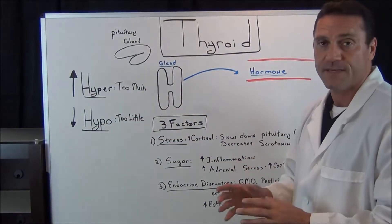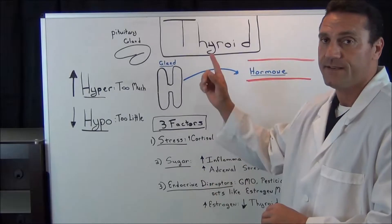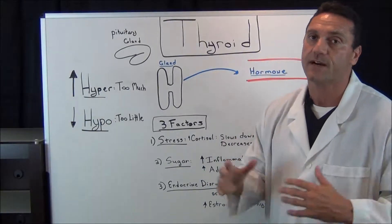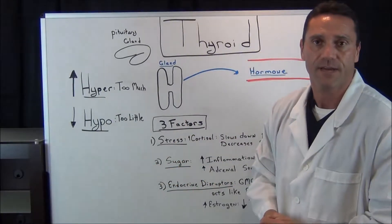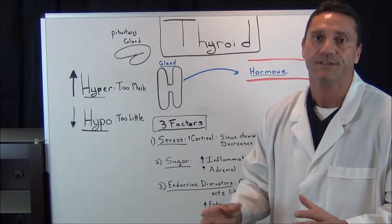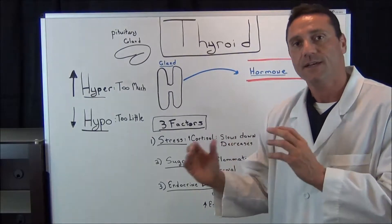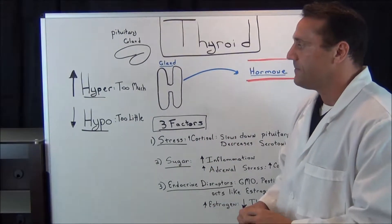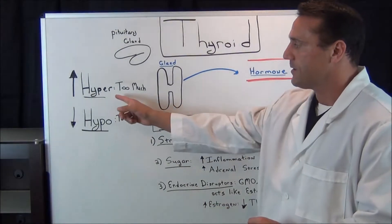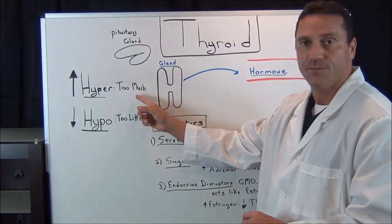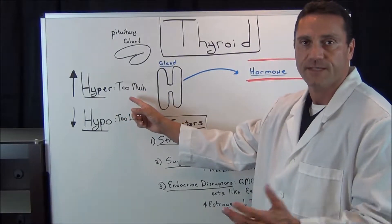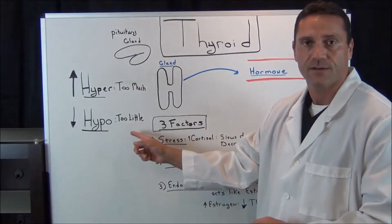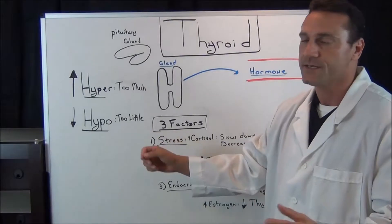The organ system I'm going to specify with is the thyroid gland, but this could be in regards to any system. It could be the cardiovascular system, GI system, and so forth. Hyper means too much, excessive amounts, and hypo is too little or deficient.